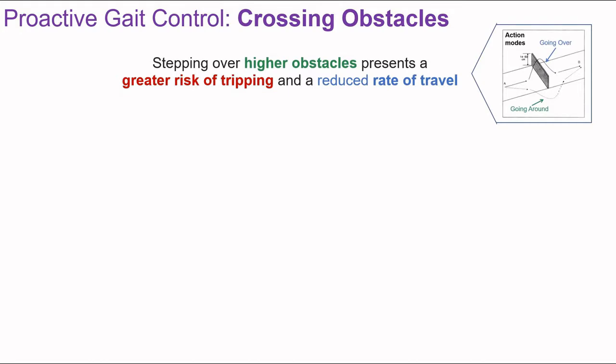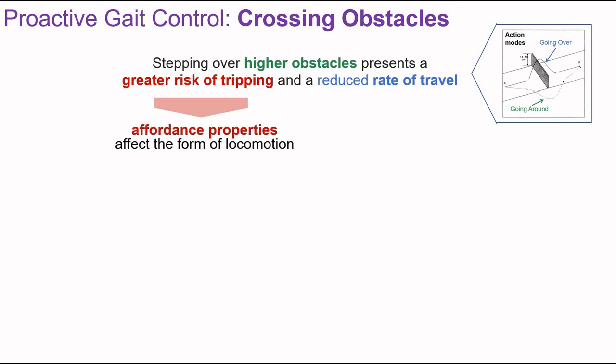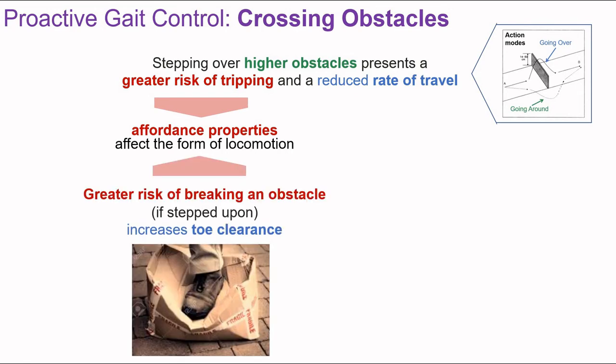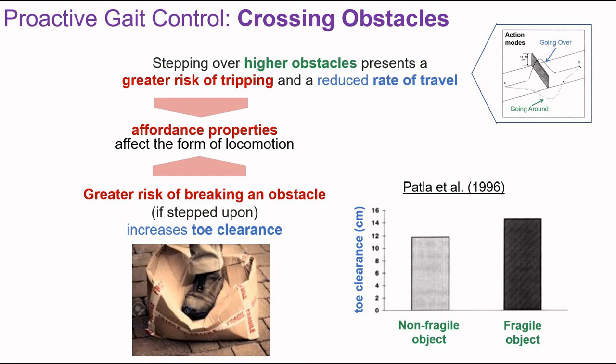Stepping over higher obstacles presents a greater risk of tripping and leads to reduced travel rate, so people select alternative action modes and walk around when obstacles get too high. People can perceive challenges posed by a particular object and adjust their mode of action accordingly — perceiving affordance properties of the environment. Another example of an affordance property is the possibility of breaking an obstacle if stepped upon: if asked to step over a breakable object, toe clearance is increased.